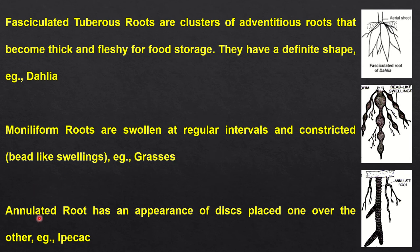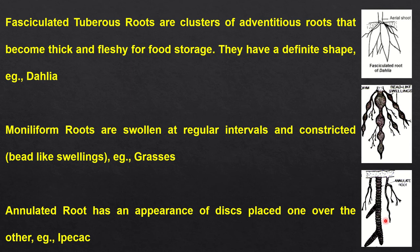Then we come to annulated roots. Annulated roots have the appearance of discs placed one on top of the other — they are stacked. This type of appearance is seen in annulated roots, which are found in ipecac. Ipecac is a very important medicinal plant with the scientific name Cephaelis ipecacuanha.